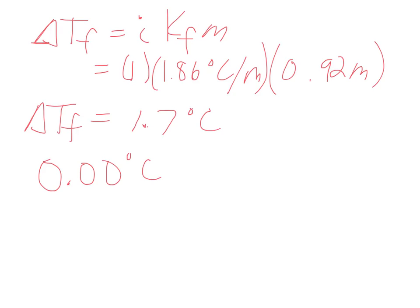We know that the freezing point of the solution is going to be lower than this, so we subtract delta T from the normal freezing point and we get negative 1.7 degrees Celsius.